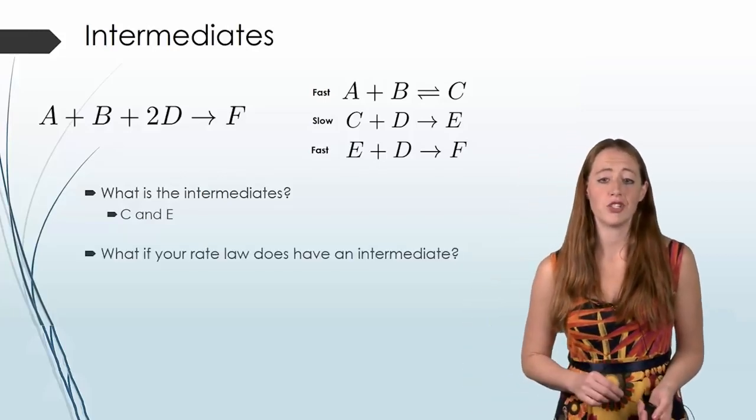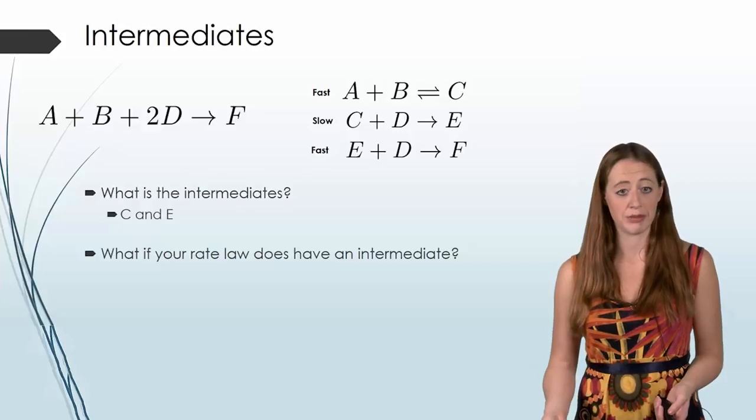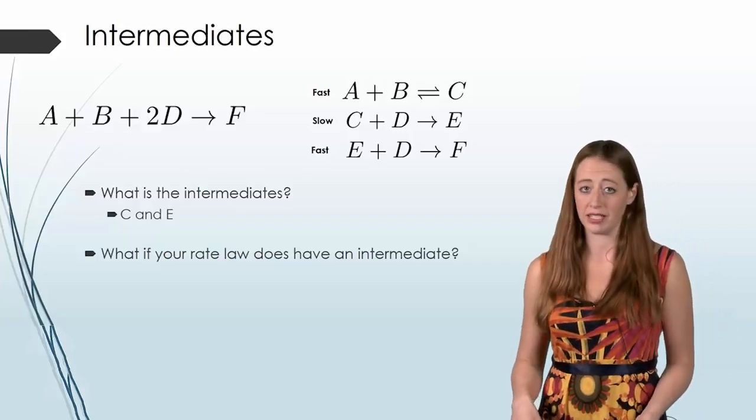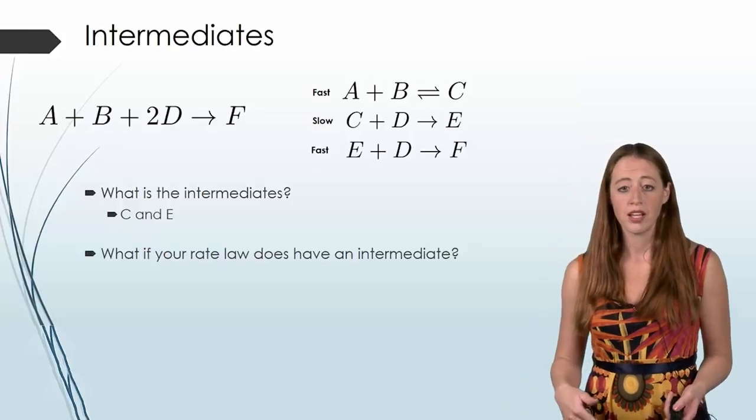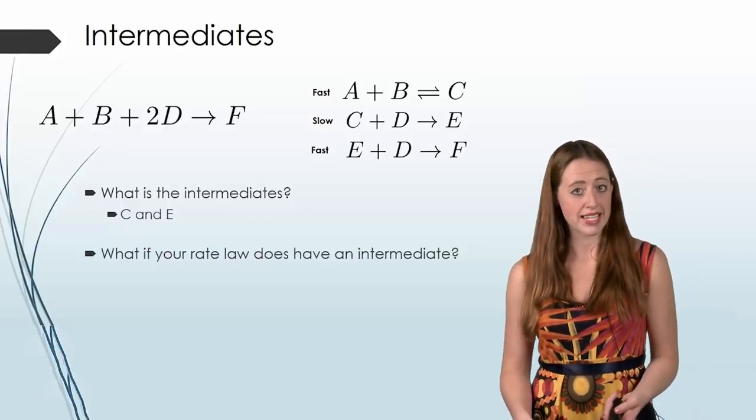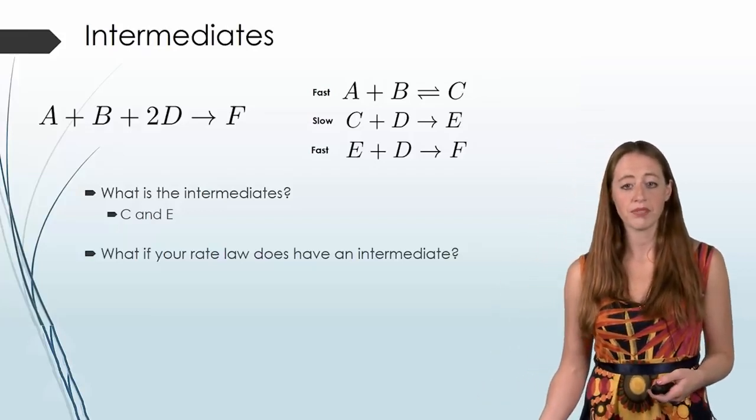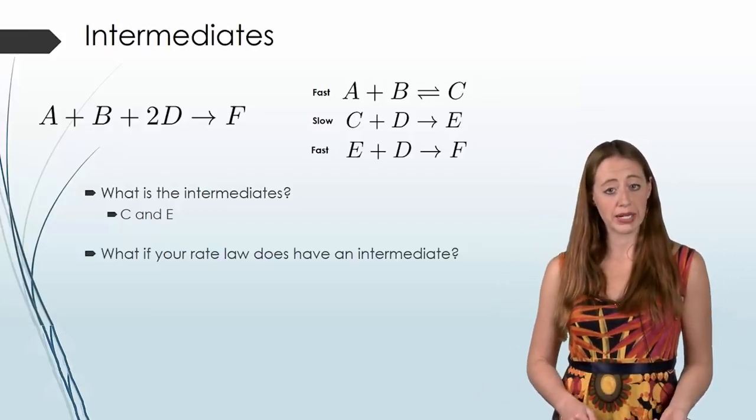Now let's look at what we can do if our rate law does have intermediates. Because if we write a rate law just like we did last time here, we run into a problem. So let's look at our slow step. It's the second one, and we have C plus D goes to E.